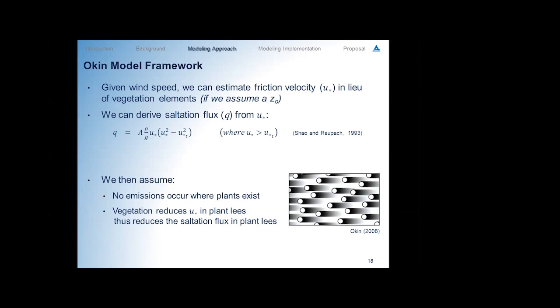To illustrate — the saltation flux Q scales to the third power of u-star once u-star exceeds the threshold u-star-t. So given a u-star we can estimate saltation flux for a given friction velocity, initially assuming no vegetation. To introduce vegetation, we first assume no emissions where plants exist, and then reduce u-star specifically in the lees of vegetation using the same equation to reduce sand flux in those spots. We then look at the integrated effect on saltation flux across the whole landscape.